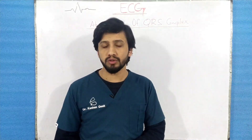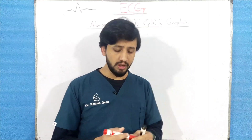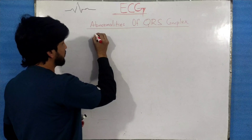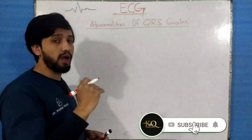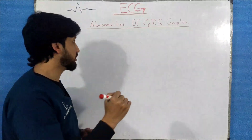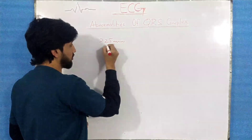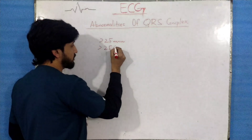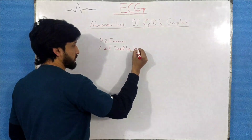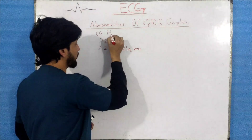Starting from the first abnormality of the QRS complex, which is the high voltage QRS complex. When you say that the voltage is high, it means the level of amplitude is greater than 25 small square boxes, which means it is greater than 25 millimeters. This is seen in the first abnormality, which is high voltage QRS.